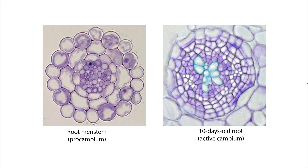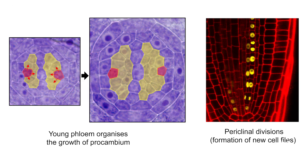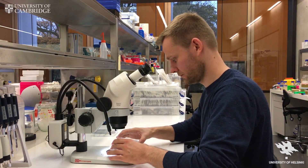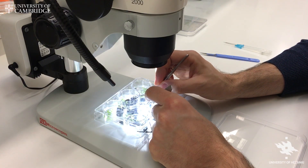We are focusing on procambium tissue, which is the very early form of this vascular meristem — a vascular stem cell-like population. We actually discovered that young phloem acts as an important organizing center. When it is in its immature state, before being fully differentiated, it directs the neighboring cells and makes them divide periclinally. So phloem at this very early stage acts as an organizing center.